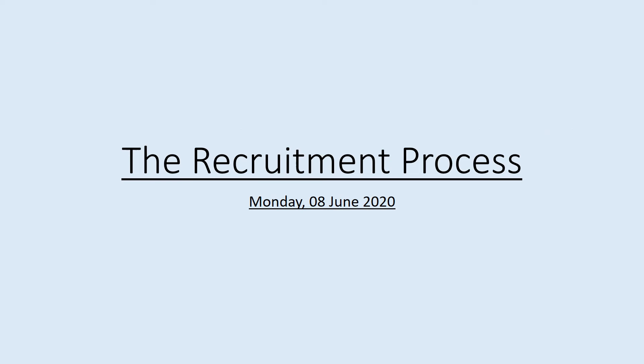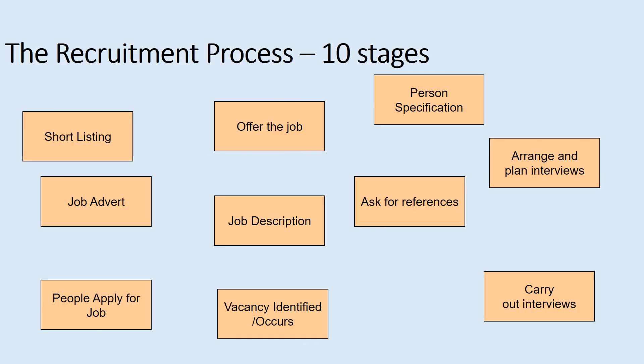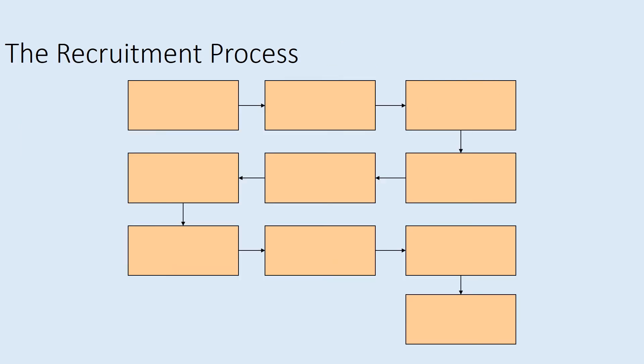Now we need to go on to the recruitment process. There are 10 stages. You may want to print this page off or write them down, then put them into the correct order — what comes first, what comes next — right to the end of the process. Either print it off or draw it out; have a good guess. It will probably take about five minutes.